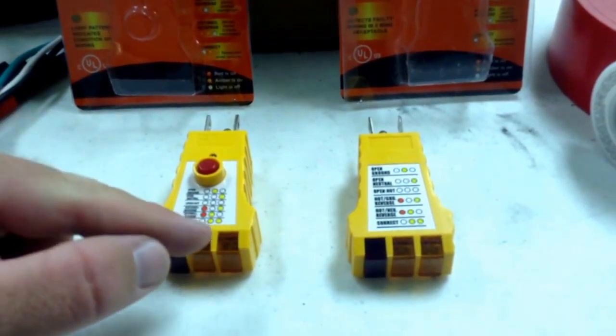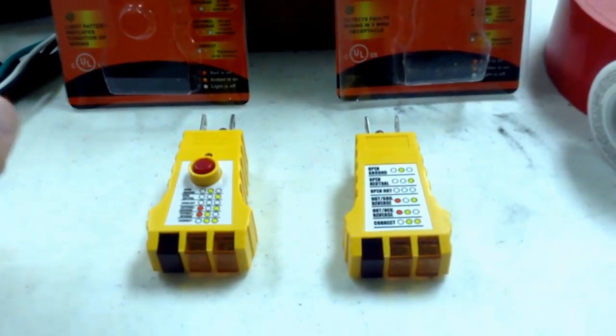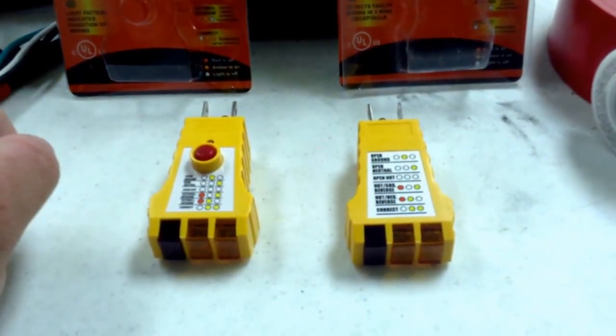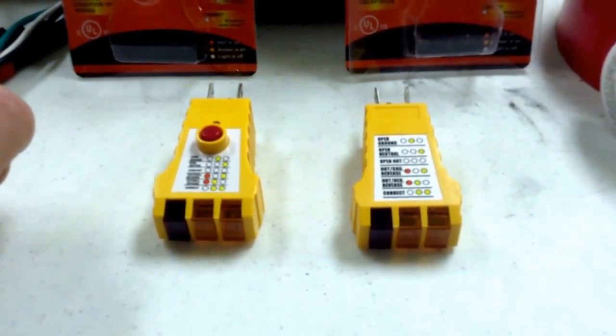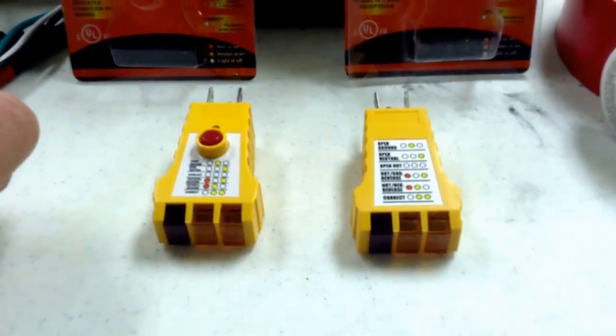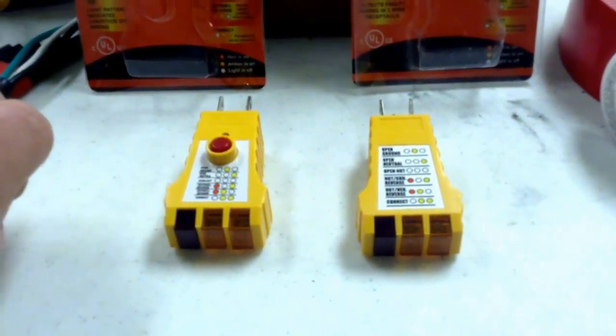So if it's wired correctly you'll have two yellow lights here, meaning if you go around to all the outlets in your home and plug this in and those two light up, everything is great. If you go to an outlet and it's different, then that outlet will need to be rewired. We'll show you a couple of scenarios ahead.